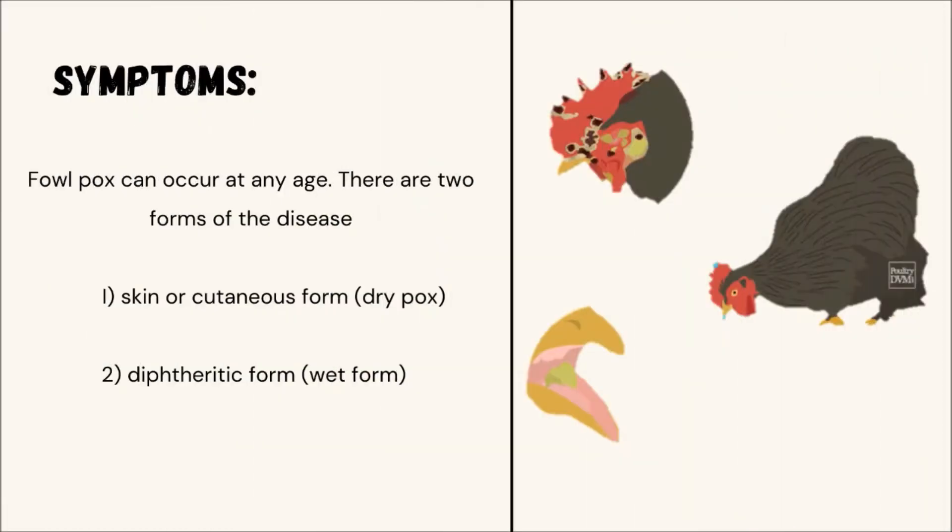Symptoms: Fowl Pox can occur at any age. There are two forms of the disease: the skin or cutaneous form, also called dry pox, and the diphtherotic form, also called wet form.